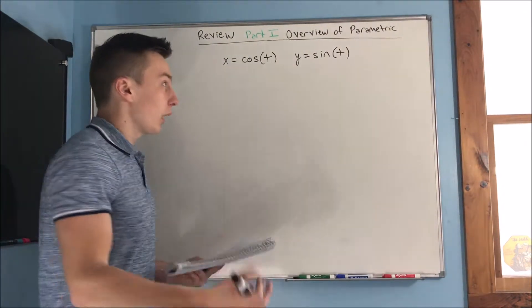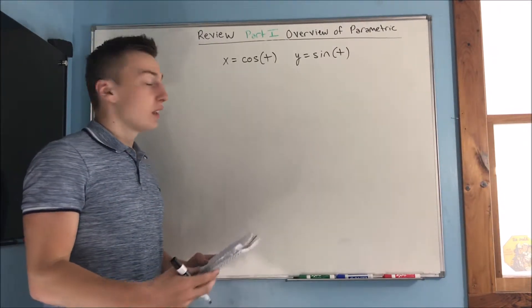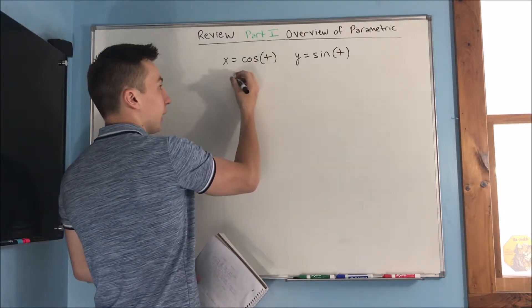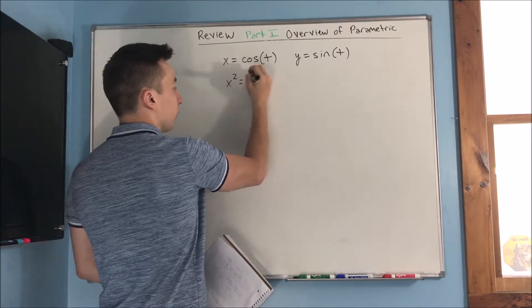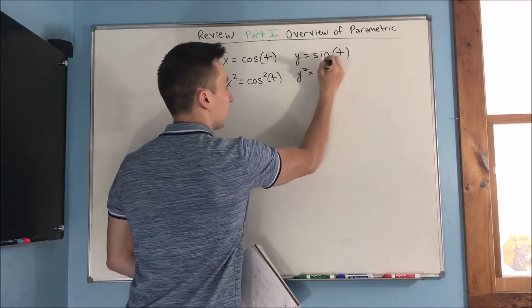We also were able to eliminate the parameter to get something back to x's and y's. So if you square both sides here, you're going to get x squared equals cosine squared t, and y squared equals sine squared t.